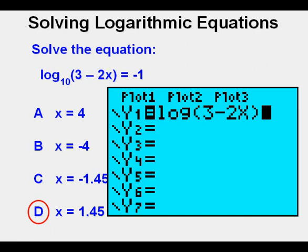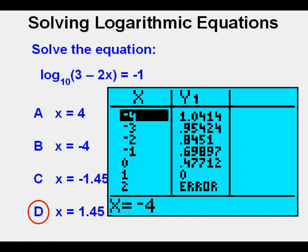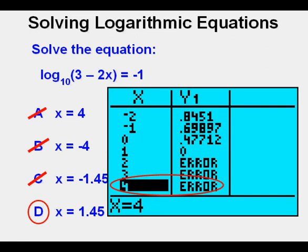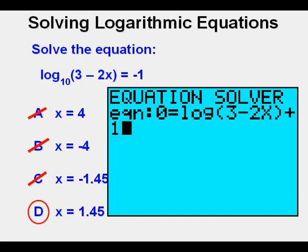We can also solve using the table view if we go back to the y equals and have just the left side of the equation entered. From here we can go to table view. We see here that at x equals negative 4 we do not have negative 1 so that eliminates answer b, and here we see that between negative 2 and negative 1 which is where answer c the negative 1.45 has to be, that the output is not close to that and cannot be negative 1 so we eliminate answer c as well. And if we see where x equals 4 we see that the output is not negative 1 but an error so we eliminate that choice answer a as well. Again that leaves only answer d as a possible right answer.